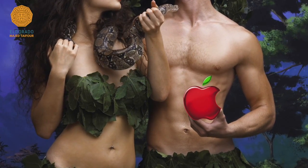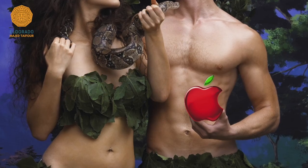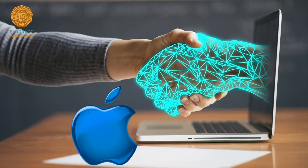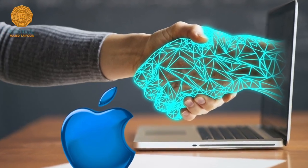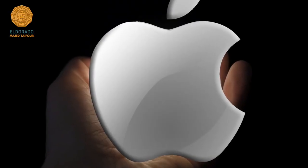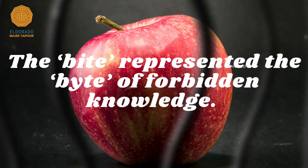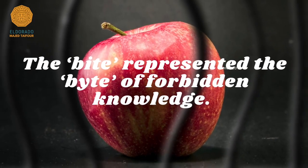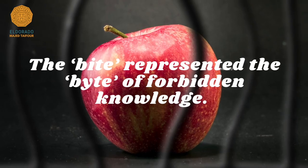Within its logo, sin and knowledge, the two forbidden fruits of the Garden of Eden, are united to symbolize the power of technology with the mysticism of religion. The bite represented the bite of forbidden knowledge prior to the expulsion of Adam and Eve from the Garden of God for disobeying his commands. This was the rumor back then.